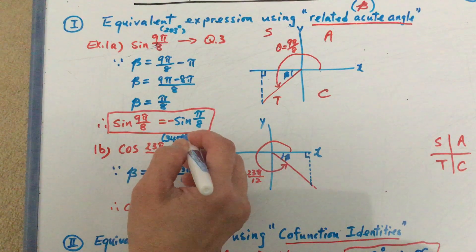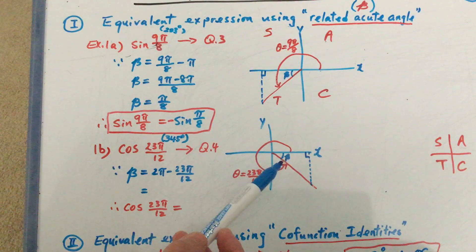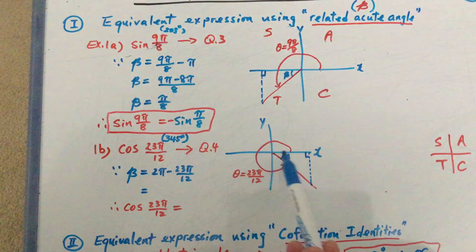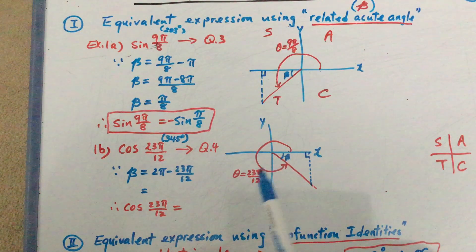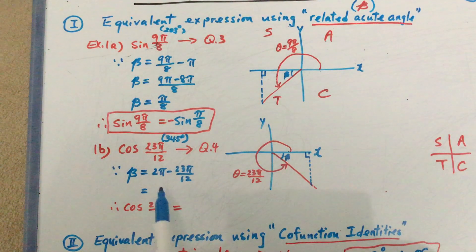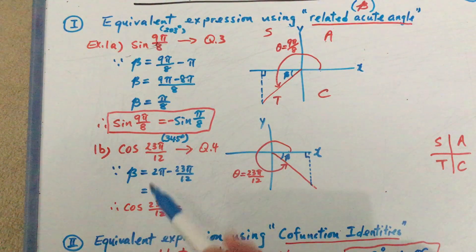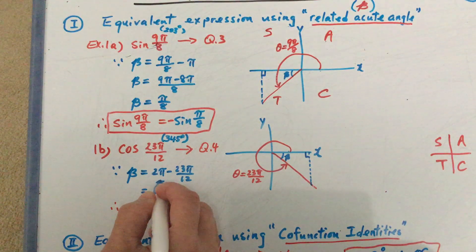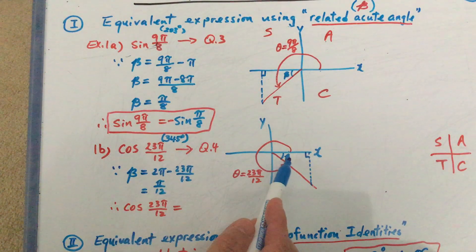I need to know where to draw this angle on the Cartesian plane. This 345 degrees will be an angle that has its terminal arm in quadrant 4. That whole angle from the initial position will be the 23π over 12. By drawing the reference triangle, the related acute angle beta is going to be equal to 2π minus the 23π over 12. With common denominators, 24 minus 23 gives you pi over 12.